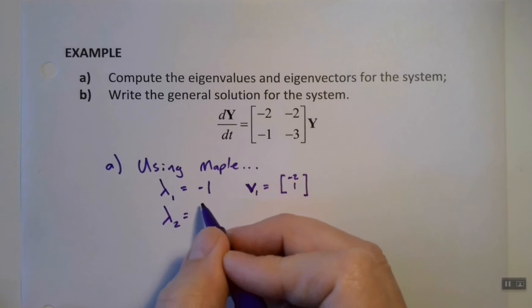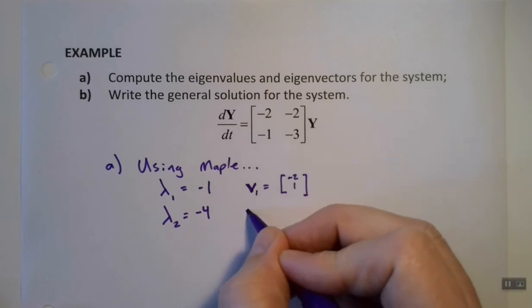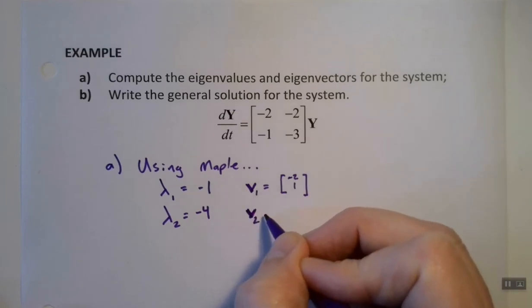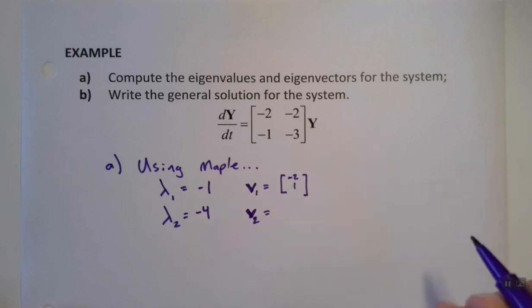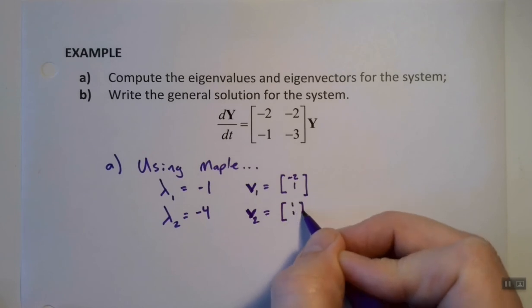And lambda 2, the second lambda, is going to be negative 4. Now remember, Maple sometimes gives them to us in the reverse order for absolutely no reason at all, and I've never figured out why, but that's not a mystery we're going to be able to solve right now. The associated eigenvector for that one is the really simple 1, 1.